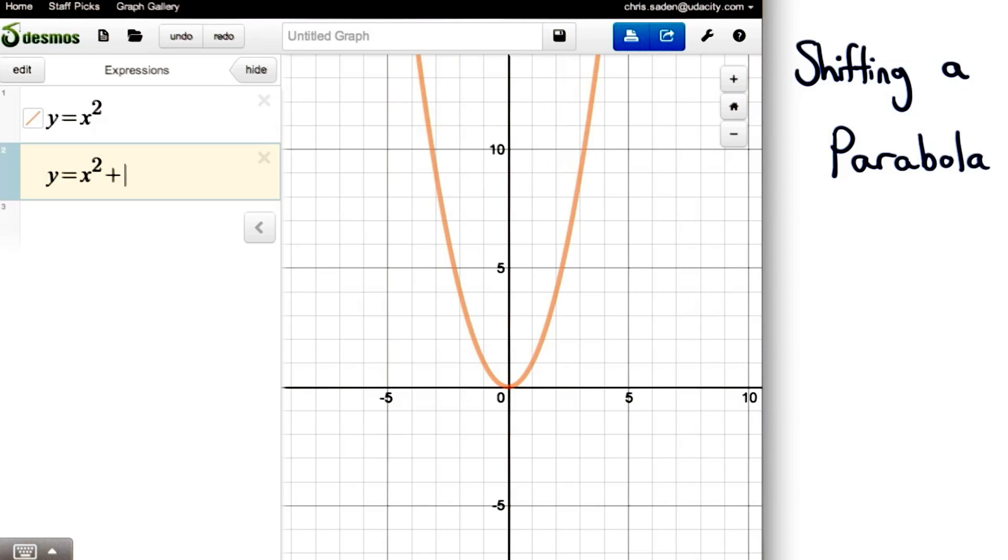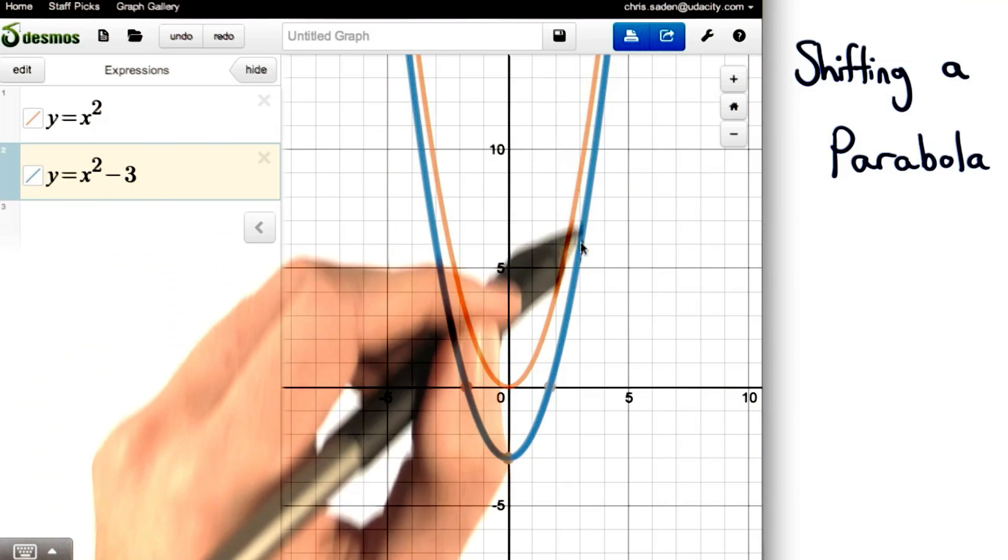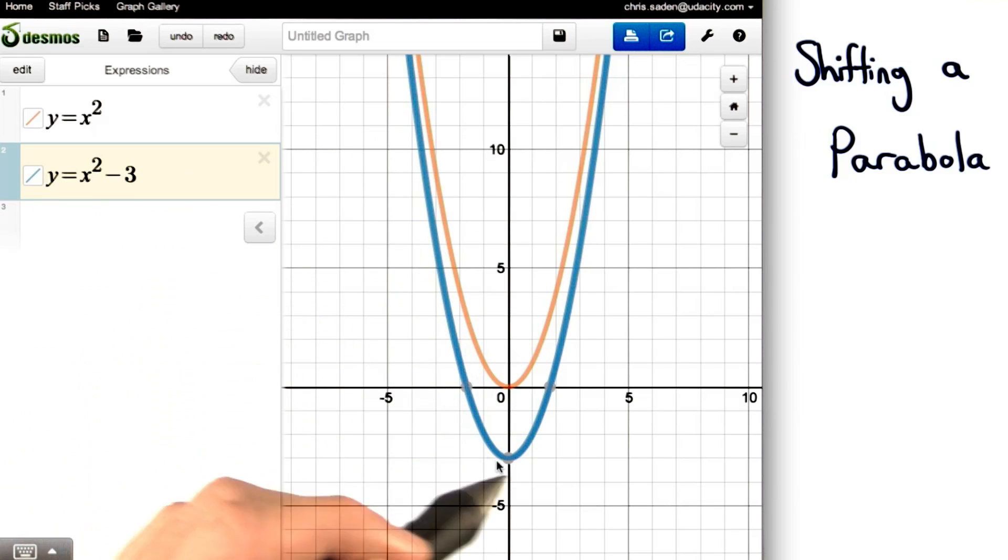So, if we subtract a number, it will shift it down. The parabola y equals x squared minus 3 is our original parabola, only it's been shifted down 3 units.